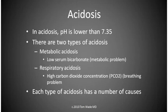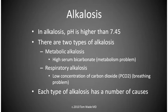Each type of acidosis has a number of causes. In alkalosis, the pH is higher than 7.45. There are two types of alkalosis. Metabolic alkalosis, in which there is a high serum bicarbonate, a metabolic problem.